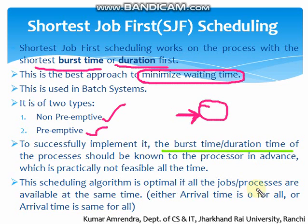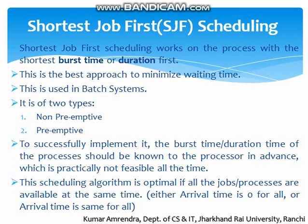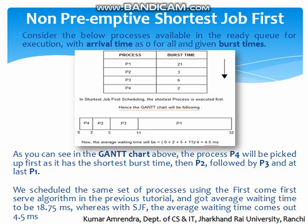This scheduling algorithm is optimal if all the jobs or processes are available at the same time, meaning they all have an arrival time of zero. If all processes have the same arrival time, this algorithm is very flexible and optimal, and Shortest Job First is best implemented in that situation.